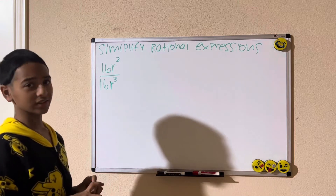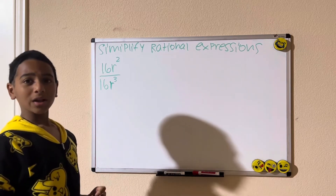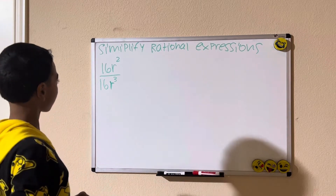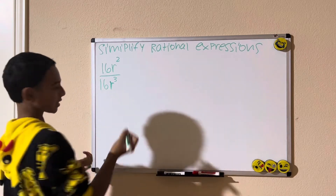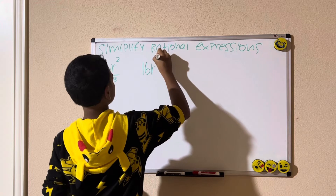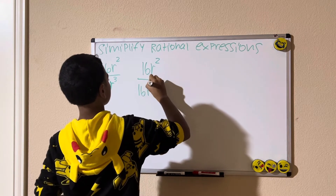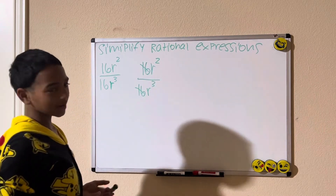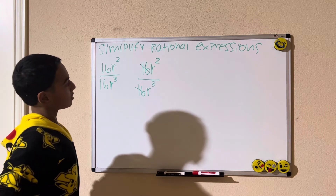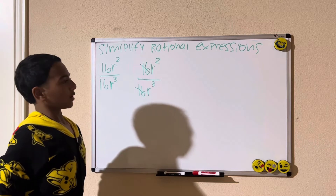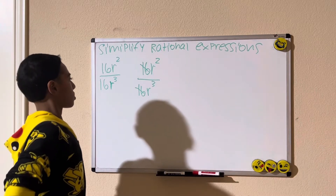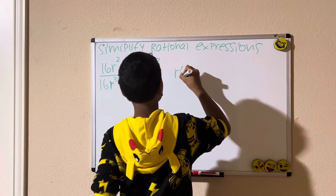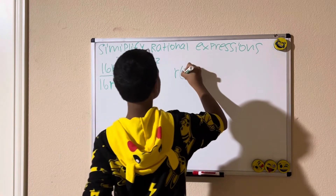r cubed. How do you simplify this? First, we either simplify by finding the greatest common factor or by simplifying the exponents. So 16 divided by 16 is 1 — it cancels out. 1 times any number is that same number. And r squared divided by r cubed is r to the 2 minus 3.